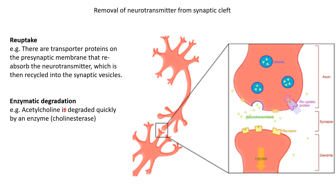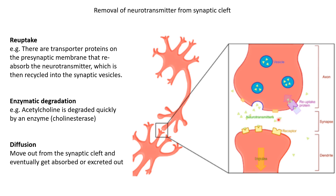The second mechanism is enzymatic degradation. There are specific enzymes in the synaptic cleft that can degrade neurotransmitters. One such enzyme is cholinesterase, which degrades acetylcholine. Similarly, other neurotransmitters have their own degrading enzymes. The third mechanism is passive diffusion — some neurotransmitters simply diffuse out to longer distances and can be either reuptaken somewhere else or flushed out of the system. Through these various mechanisms, the system removes neurotransmitters so the synapse is ready for communication when a new action potential arrives.